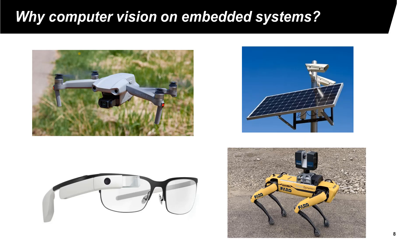Why do we want to study computer vision for embedded systems? Many embedded systems have cameras and can benefit if these systems have the ability to understand images or videos. Consider the examples on this slide. At the upper left corner is an aerial robot, also called a drone. Typically, a drone transmits the captured video to a human operator, who decides what to do with the data. The drone itself does not make decisions based on the video.